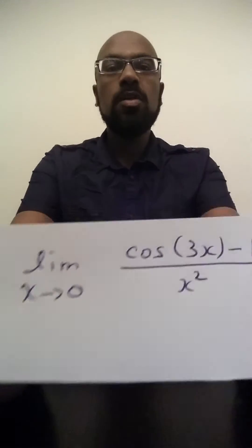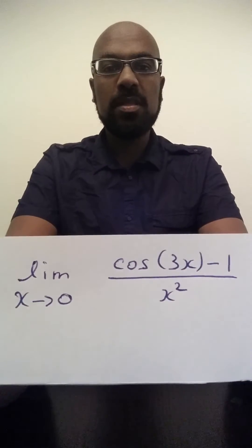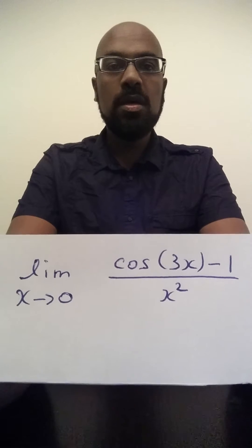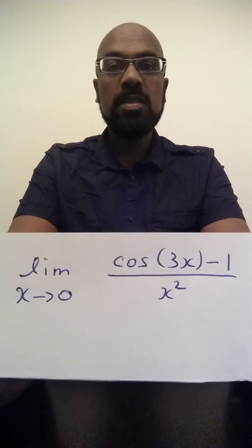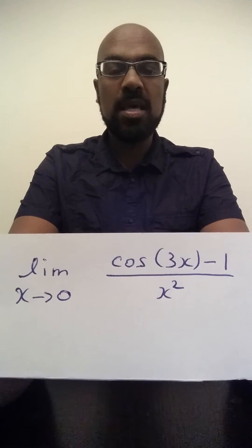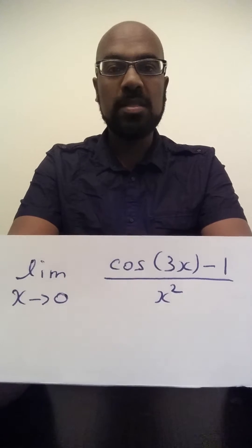Today's problem is the following limit. Evaluate the limit as x approaches 0 of cosine 3x minus 1 all over x squared. This is actually taken directly from a practice exam of the GRE Math Subject Test.